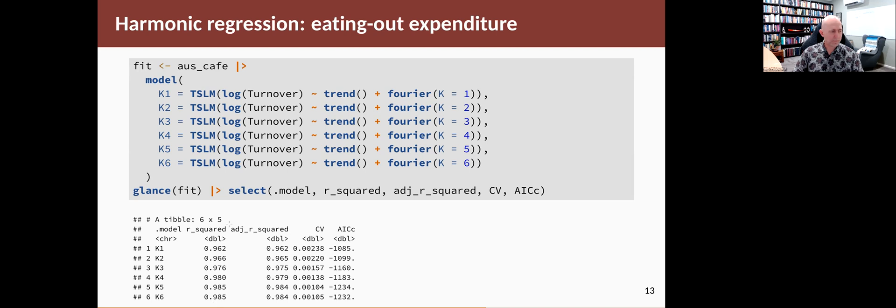And you can see that for the last few models, at least the R² and the adjusted R² are indistinguishable to three decimal places. The AICc statistic, the fifth model is best, slightly better than the sixth model. And in the CV statistic also, the fifth model is best. So that tells us that we should be using five pairs of Fourier terms when we fit this model, which means we're going to use 10 coefficients to describe the seasonality.